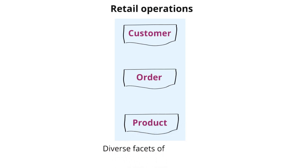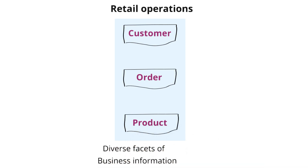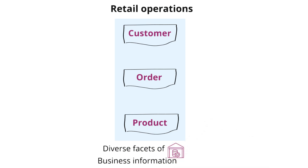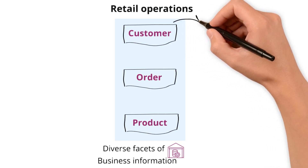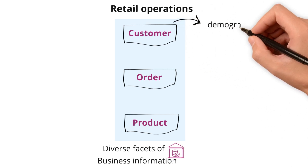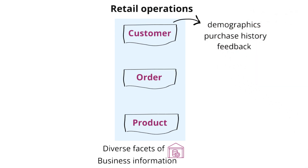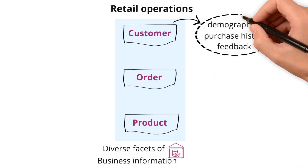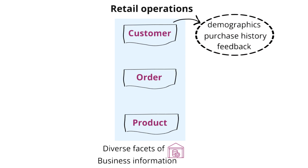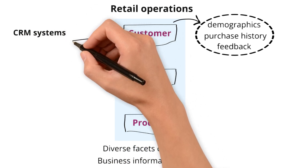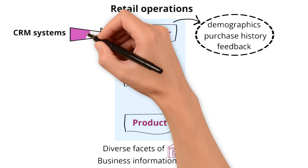These represent diverse facets of business information that a data warehouse needs to consolidate and analyze. Looking at our first data source, customer data, this includes demographics, purchase history, and feedback, providing a 360-degree view of a customer's interaction with the business. Applications such as CRM systems feed this data into the data warehouse.